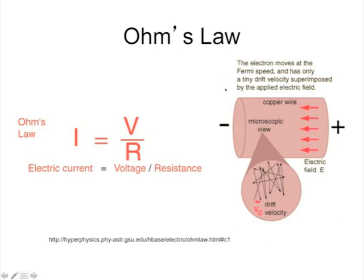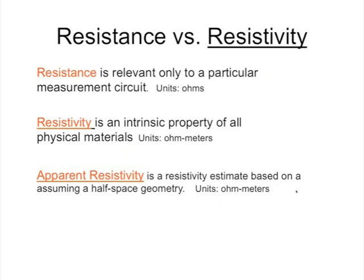The electron bouncing around in a copper wire — bouncing between the copper atoms — does so at a very fast velocity called the Fermi speed. But the actual drift velocity of the current is much, much less than the Fermi speed. The electron starts here, bounces around like crazy, ends up right here, and that gives you its drift velocity.